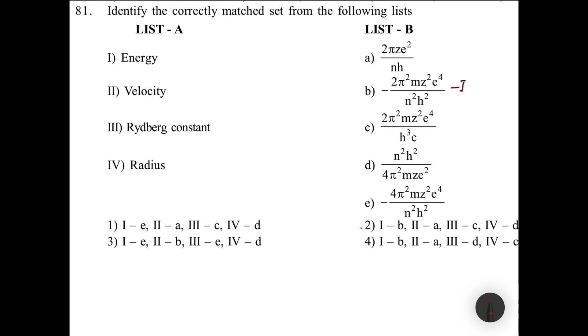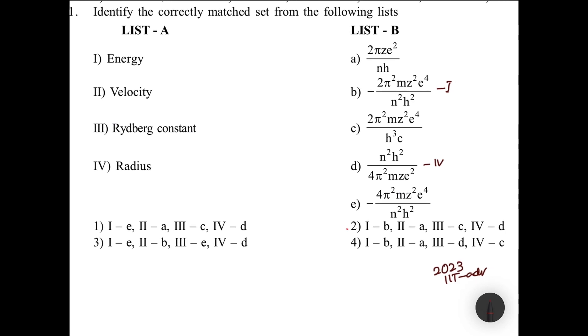Radius is easy. You can check: n²h²/4π²mze². When these kinds of options are given, 2023 JEE Advanced also has similar questions. With options, you need to check like this: b1, d4. How many options are there for b1 and d4? Only one option is there. Your answer is done.